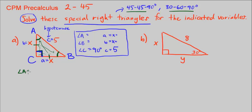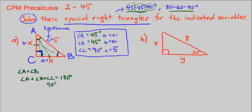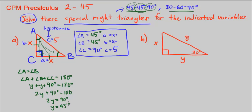Since angle A equals angle B, and we have a 90-degree angle, the other two must be 45 and 45 degrees. To verify: all three angles add to 180 degrees. Angle C is 90 degrees, and A and B are both equal — call them y. So 2y + 90 = 180. Subtracting 90 from both sides and dividing by 2 gives y = 45 degrees.